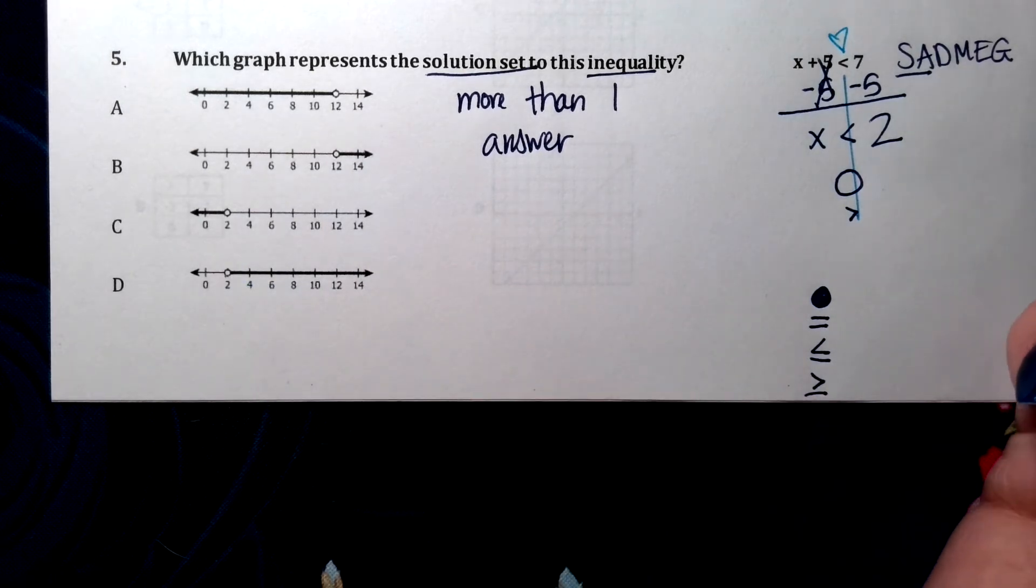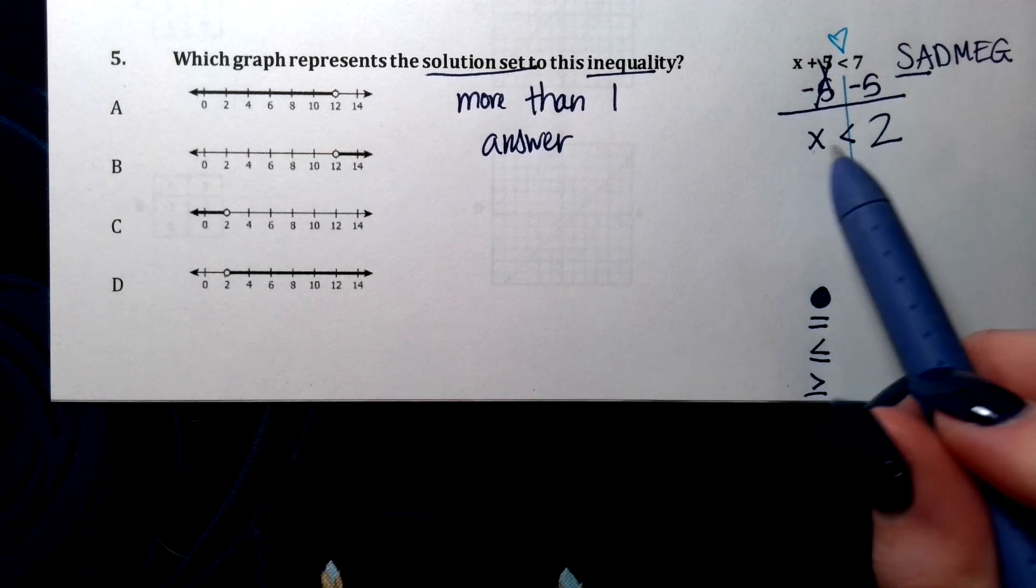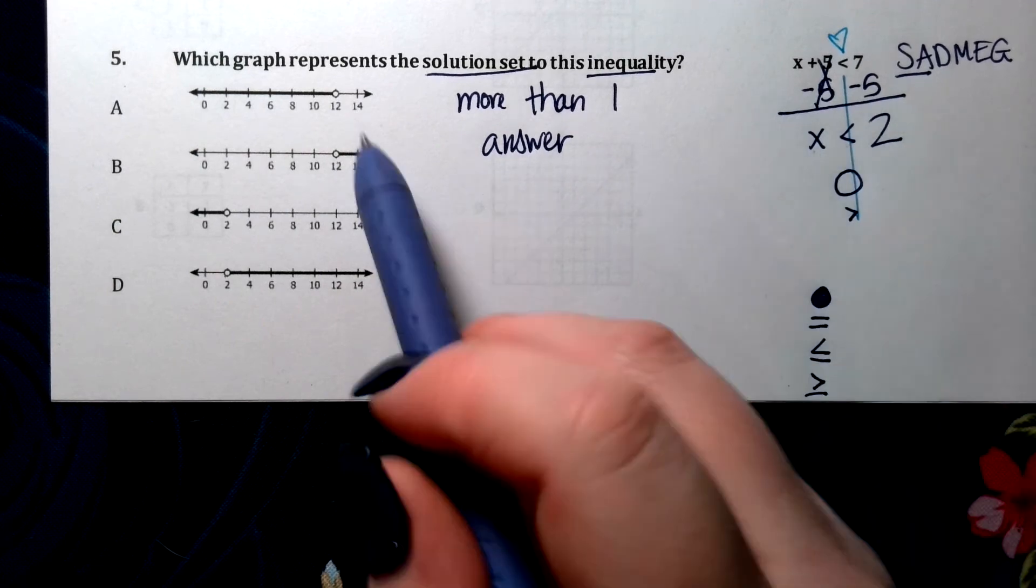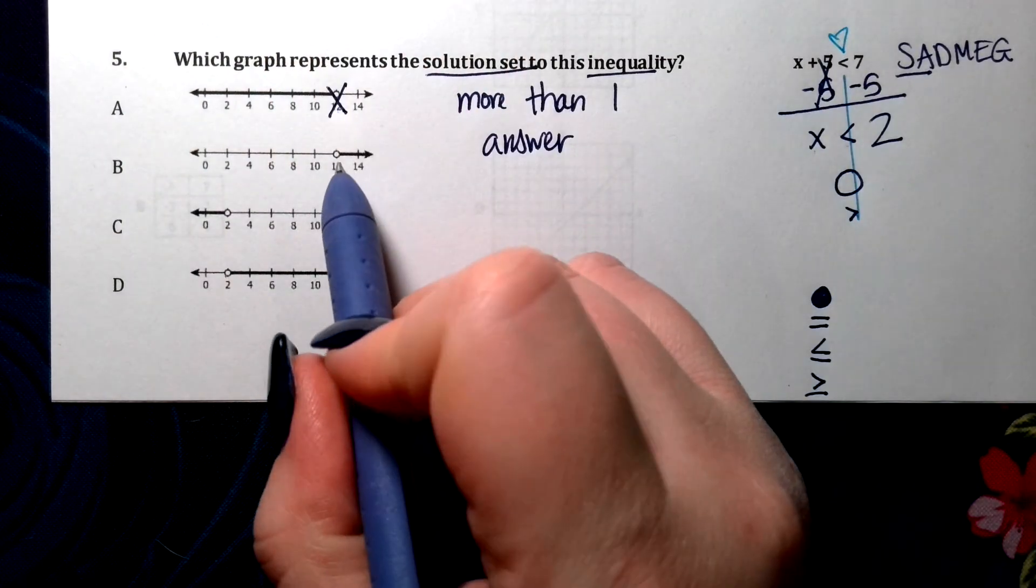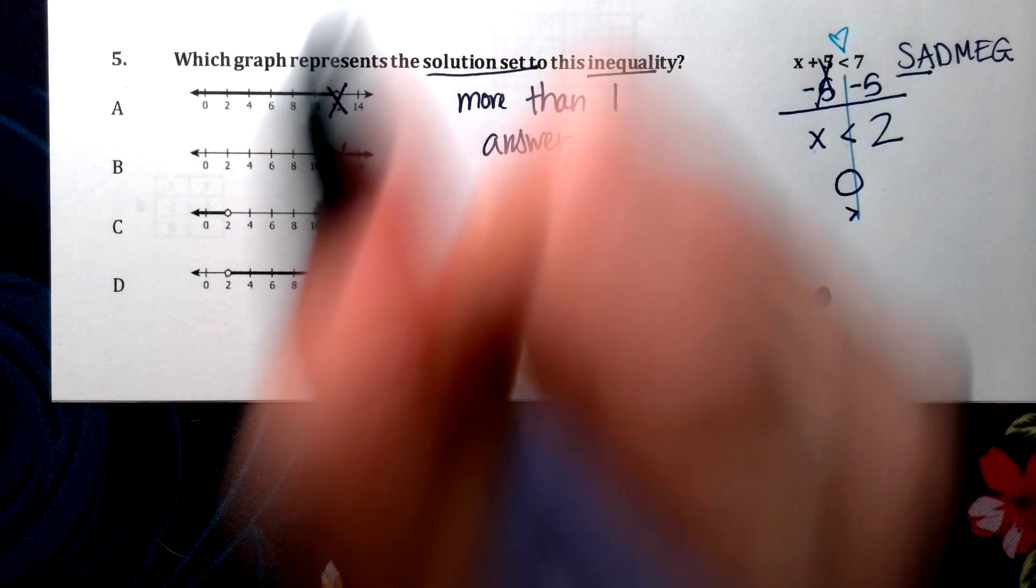Now we need to check for the number. We have x is less than 2. Here, we have a dot on 12. 12 is not right. Then same thing on B. You can't have dots on 12.